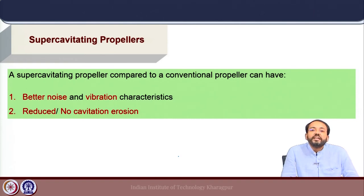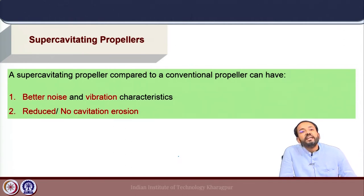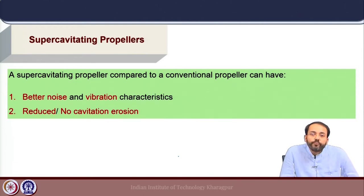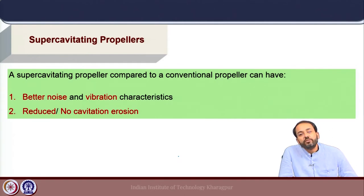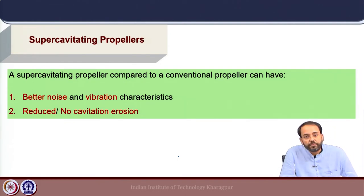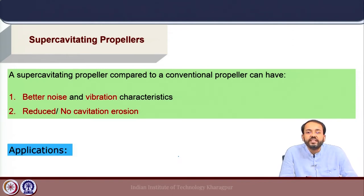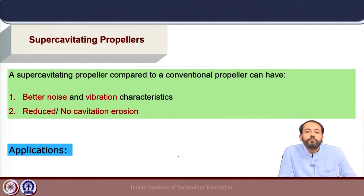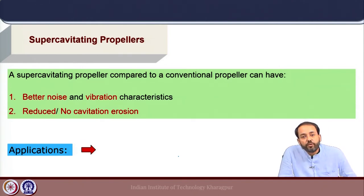In supercavitating propellers, the back of the propeller blade section is fully covered with a vapor-filled cavity, achieved using special geometric sections of the propeller blade. A supercavitating propeller can be adopted for specific operating conditions defined by a combination of the advance coefficient J and the cavitation number. Compared to a conventional propeller, the advantages for high speed operations include better noise and vibration characteristics, and reduced or no cavitation erosion, since the cavitation bubble covers the entire back side of the blade and flow is separated right from the leading edge.